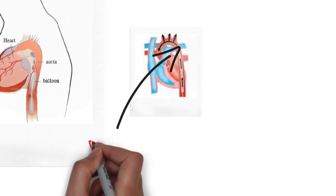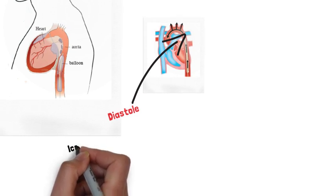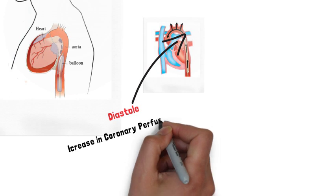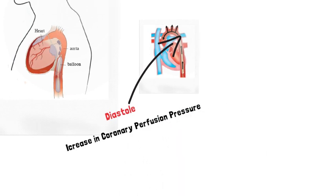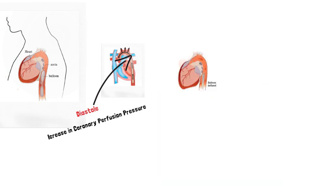The balloon is guided all the way up to the descending aorta approximately 2 centimeters from the left subclavian. So at the start of diastole, the balloon will inflate and then you'll have augmenting coronary perfusion. At the beginning of each systole, the balloon will deflate and the balloon is ejected from the left ventricle.